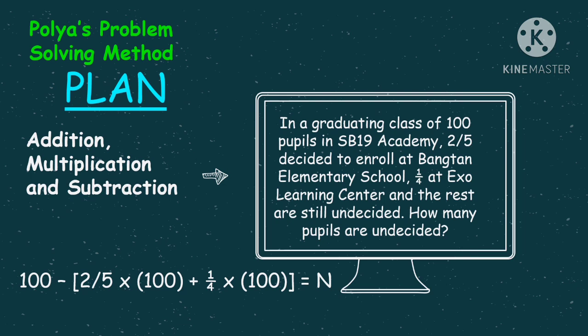Bakit ganito ang ating number sentence? Una, pupunin muna natin yung total number ng nag-enroll sa Bangtan Elementary School by multiplying two-fifths or by getting two-fifths of 100 through multiplication. Then, para malaman din natin ang total number na nag-enroll sa Exo Learning Center, we will get one-fourth of 100 or multiply one-fourth by 100. Then kunin natin yung sum ng dalawang school, saka natin isasubtract sa total graduating pupils para makuha natin yung pupils na undecided.